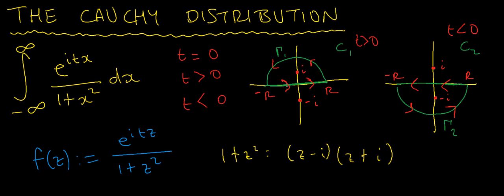My first contour C1 consists of a semicircle traversed anti-clockwise. It goes from minus r to r as its diameter, then curves round from r back to minus r along a curve I'll call gamma 1. My second contour C2 is also traversed anti-clockwise, but goes from r to minus r along the diameter, then from minus r to r along the arc gamma 2. For C1, the pole at i lies inside the contour but minus i doesn't; for C2, the pole at minus i lies inside the contour but i does not.